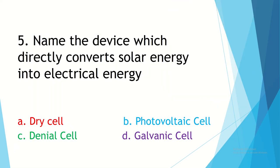Question 5. Name the device which directly converts solar energy into electrical energy. Option A, dry cell. Option B, photovoltaic cell. Option C, Daniel cell. Option D, galvanic cell. Your time starts now.